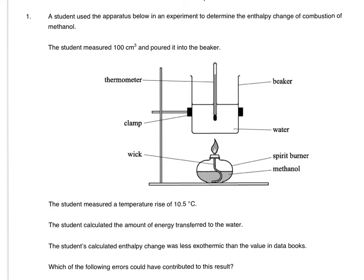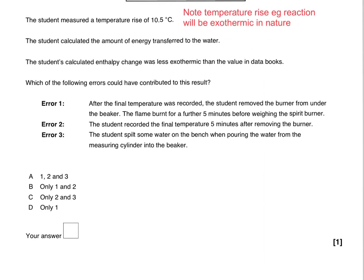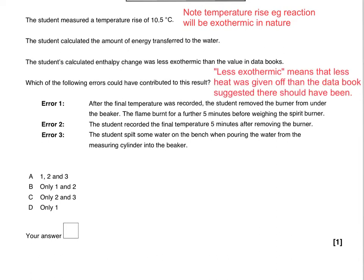So let's have a look at this question. It's obviously the same setup we've looked at earlier in the clip. The student measured 100 cm³ of water and poured it into the beaker, then measured a temperature rise of 10.5°C, which tells us the reaction is exothermic. The student calculated the amount of energy transferred, and their calculated enthalpy change value was less exothermic than the value in the data books — meaning less heat was given off than the data book suggested for that particular fuel.